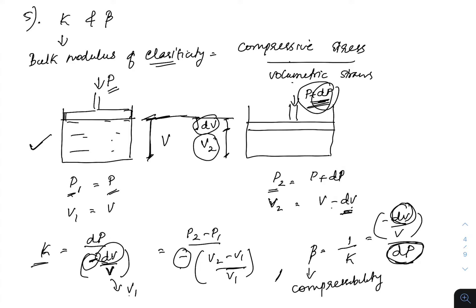Compressibility β is the reciprocal of bulk modulus: β = 1/K = −(DV/V)/DP. Bulk modulus can be defined as the change in pressure required for a given volume V to change by DV. Compressibility is the amount of volume change produced by a given incremental pressure DP.